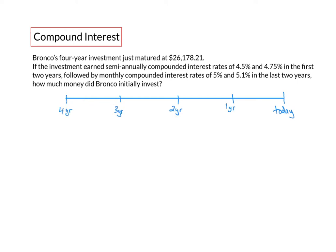In the first year, the investment earned 4.5% compounded semiannually. So in year one, the investment was earning 4.5% compounded semiannually.